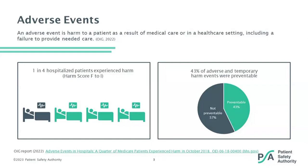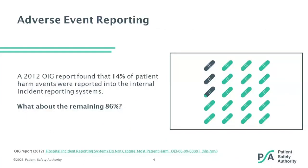Amazingly, out of that, 43% of the events were preventable. A 2012 OIG report found that only 14% of the patient harm events were actually reported into the Internal Incident Reporting System.